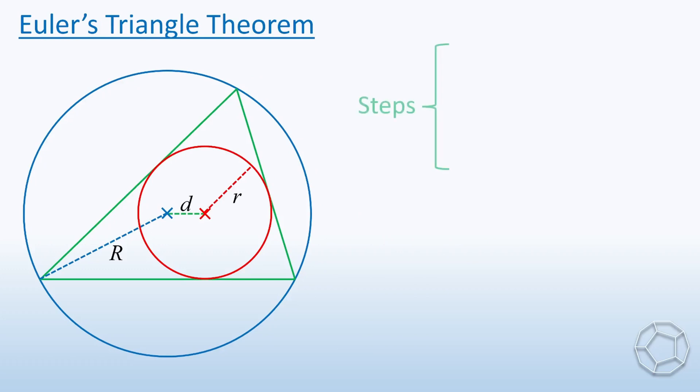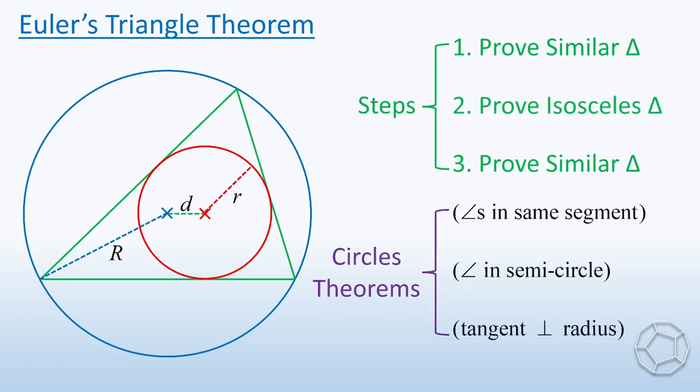We work on the general case in three steps, proving two pairs of similar triangles and one isosceles triangle. We shall also make use of these theorems of circles and tangents.